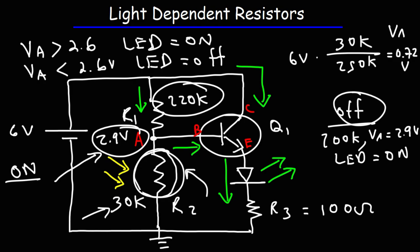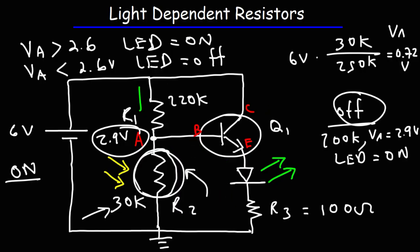That's how you can build a dark activated LDR sensor circuit. Now let's talk about how we can build a light activated LDR circuit, where the LED will turn on when light is shining upon the circuit. Let's look at a demonstration.